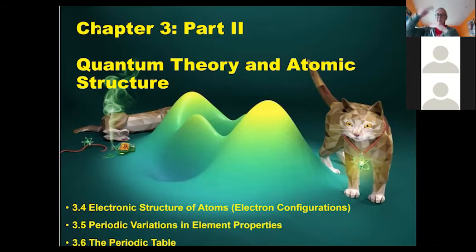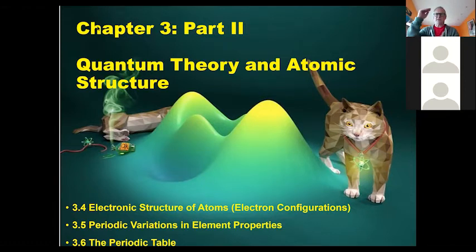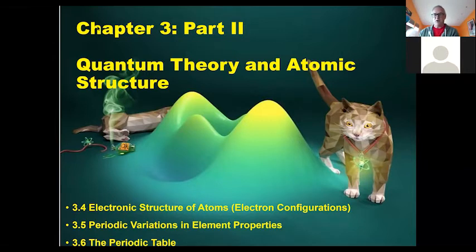If there were an infinite number of energy levels, electrons could move basically anywhere, and we would see all wavelengths — white light coming from every atom. But we don't. We see very specific wavelengths. Because wavelength is related to energy, that tells us something really important: there are very specific energy levels of electrons in the atom.